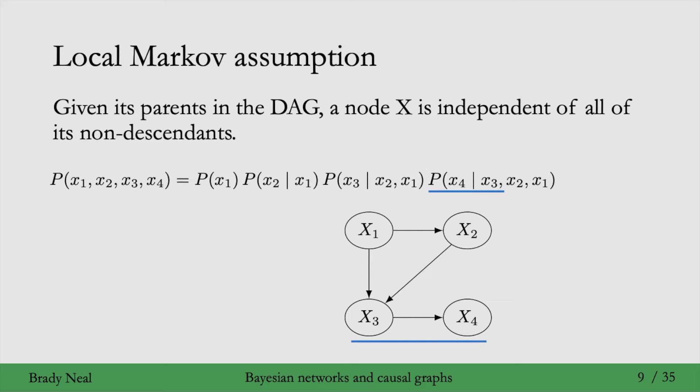So in this example that we just saw, here's a graph for it, and here's the factorization that we were to get from the chain rule of probability. In this example, we can actually simplify this last factor because x4, given its parent x3, is independent of every other variable in the graph, all of its non-descendants, and x4 doesn't have any descendants. So because it's independent of every other variable in the graph, we can simplify this last factor to just P of x4 given x3.